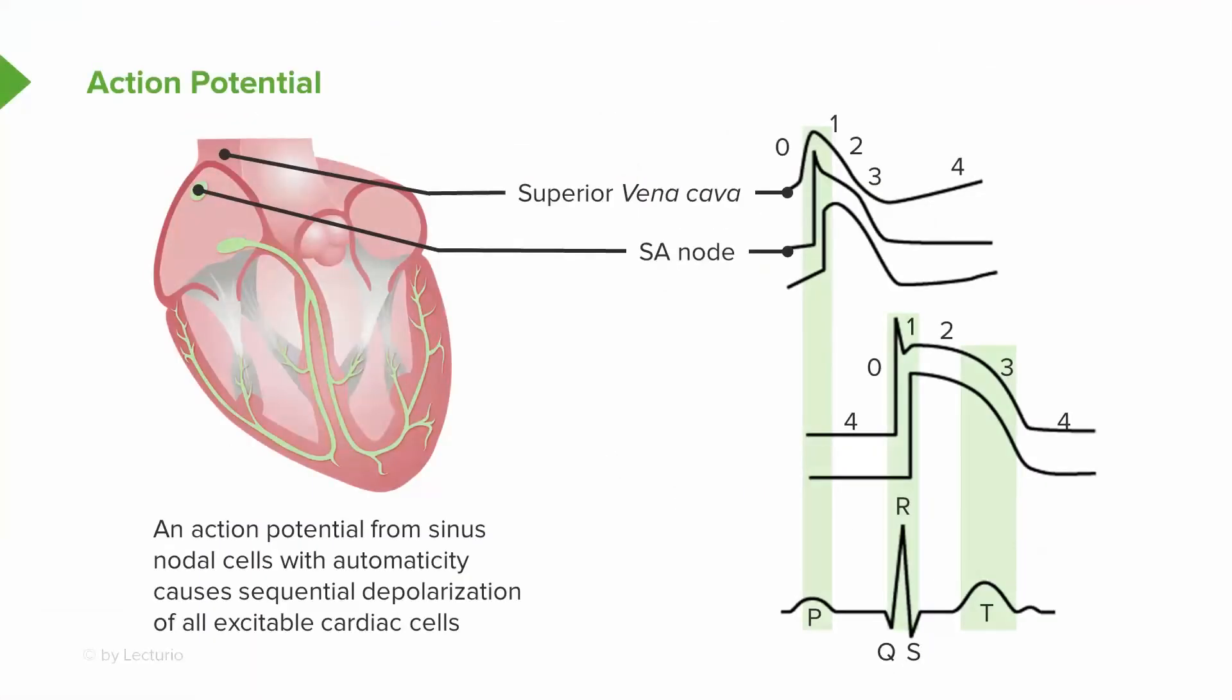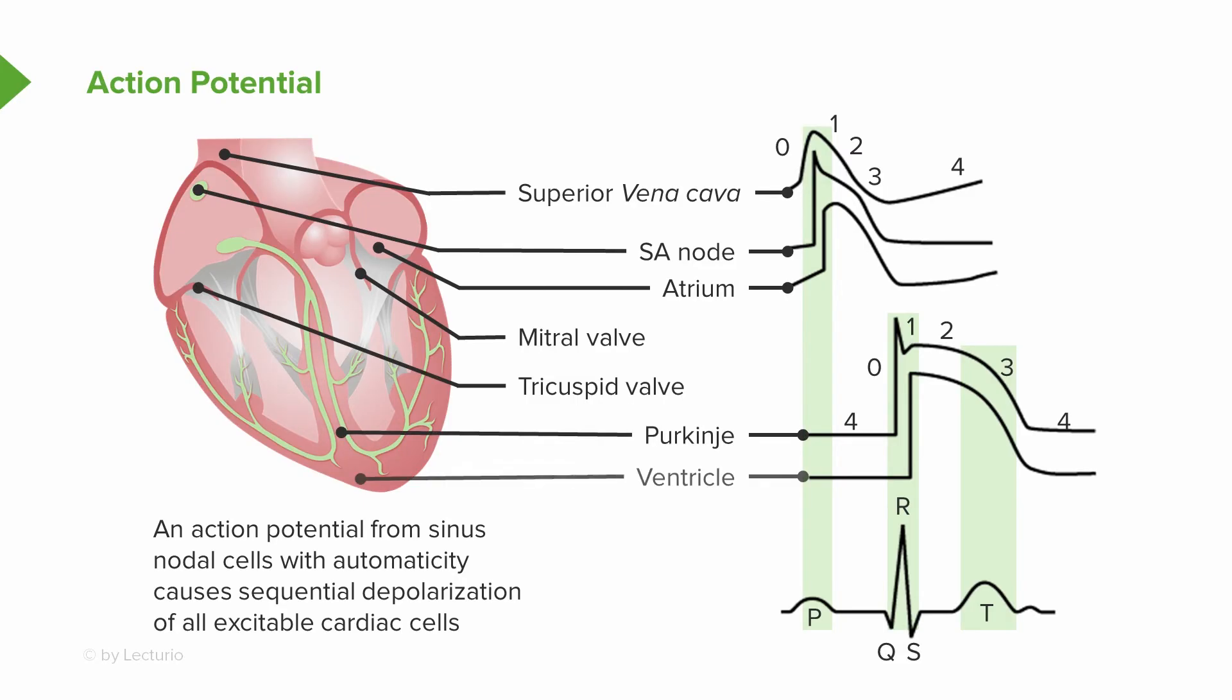And so then here we see again, going down through the atrium and into, past the mitral valve, past the tricuspid valve, into the ventricle. You're in the Hiss-Purkinje system now. And then eventually you finish and you get to the T wave as everything resets itself, getting ready for the next beat.